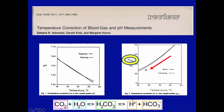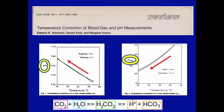Looking at the carbonate equilibrium equation: if PCO2 is dropping, it shifts the equation to the left, meaning fewer hydrogen ions in solution. Since pH is the negative logarithm of hydrogen ion concentration, removing hydrogen ions raises pH — producing essentially a respiratory alkalosis just from cooling.